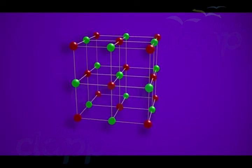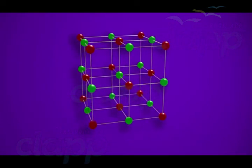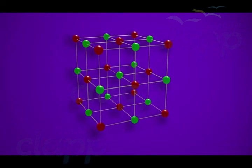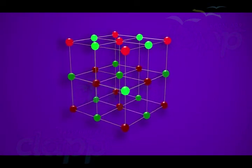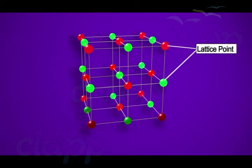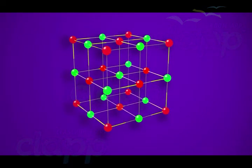This three-dimensional arrangement of particles in space represented diagrammatically is called a crystal lattice. Each point in a crystal lattice is called lattice point or lattice site and are joined by straight lines to bring out the geometry of the lattice.